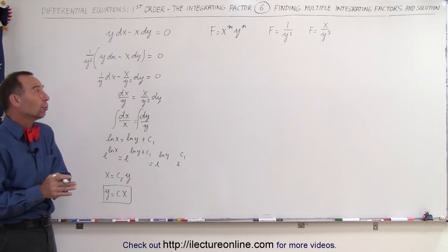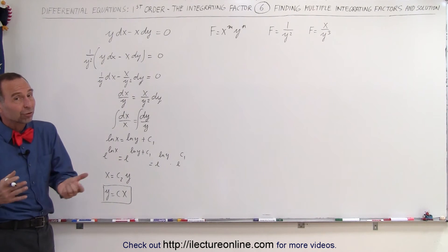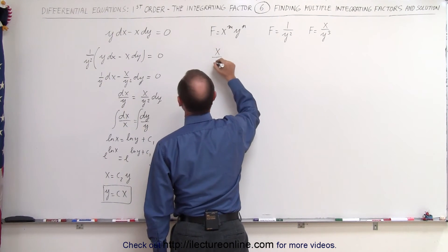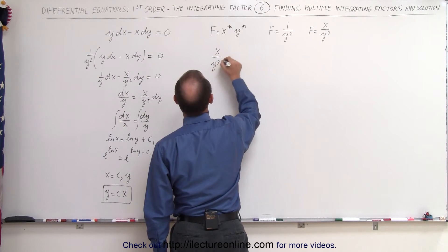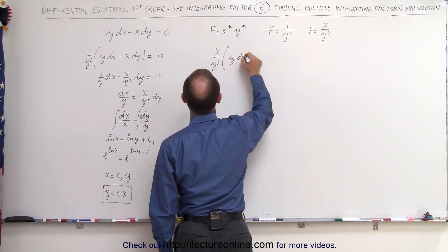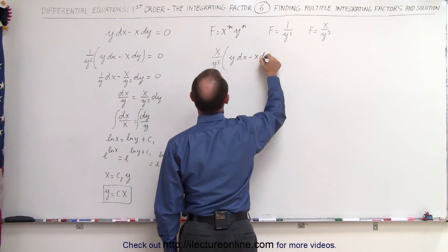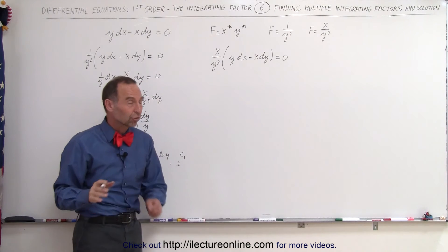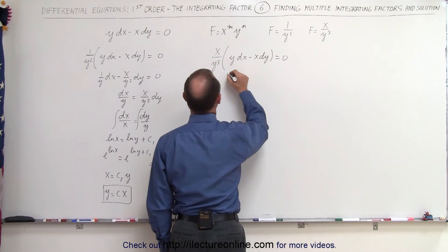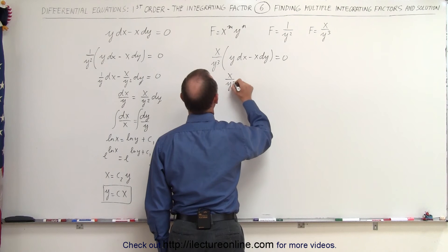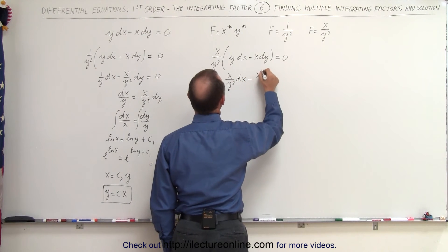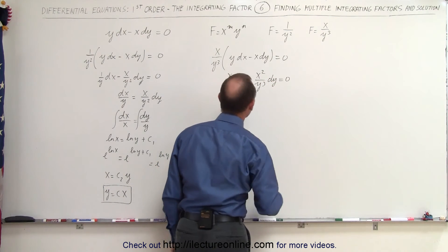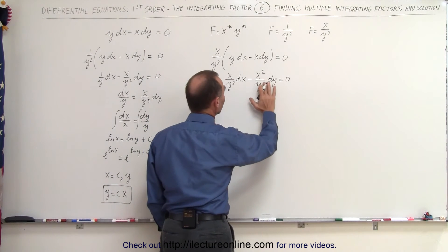Should we get the same solution when we use a different integrating factor? The answer is yes. Here we multiply by integrating factor x divided by y cubed times (y dx minus x dy) equals 0. Multiplying the right side by x over y cubed still gives 0, so the left side becomes x over y squared times dx minus x squared over y cubed times dy equals 0. We can separate the variables here as well.